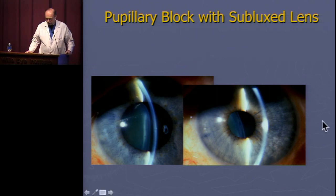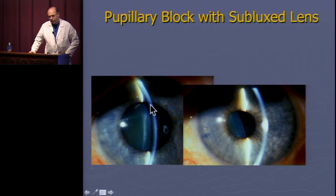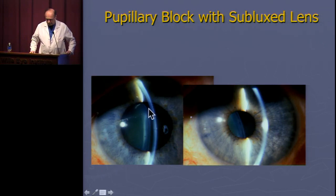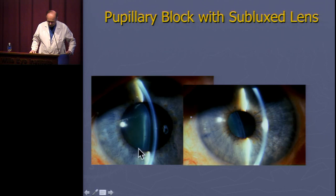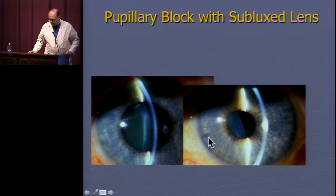Here's a case I saw: a gentleman who fell off a ladder — he was a bit of a drinker — and subluxed his lens. You can see a nice seal with vitreous coming around superiorly, sealing at the pupillary border, with the lens coming forward and pressures in the 50s. With laser iridotomy, the lens falls right back into position.